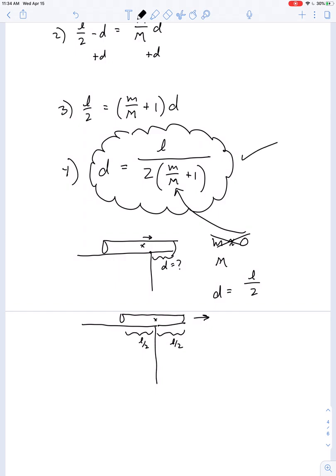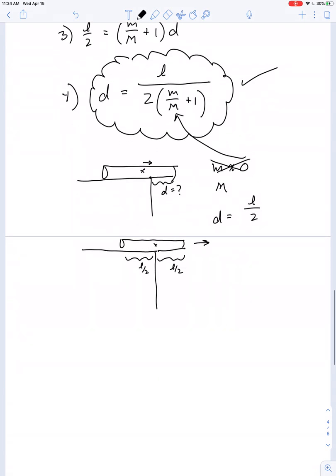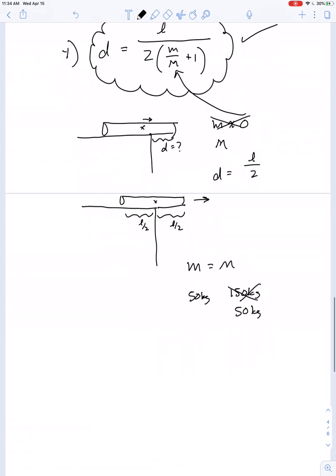And if you were to slide it any further to the right of course it's going to tip. So this equation seems to work out for that ridiculous case. What if we had the case where the mass of the person is every bit as great as the mass of the log? So instead of a 50 kilogram person and a 150 kilogram log, what if the log is much lighter and itself is only 50 kilograms? Then how far could they go?